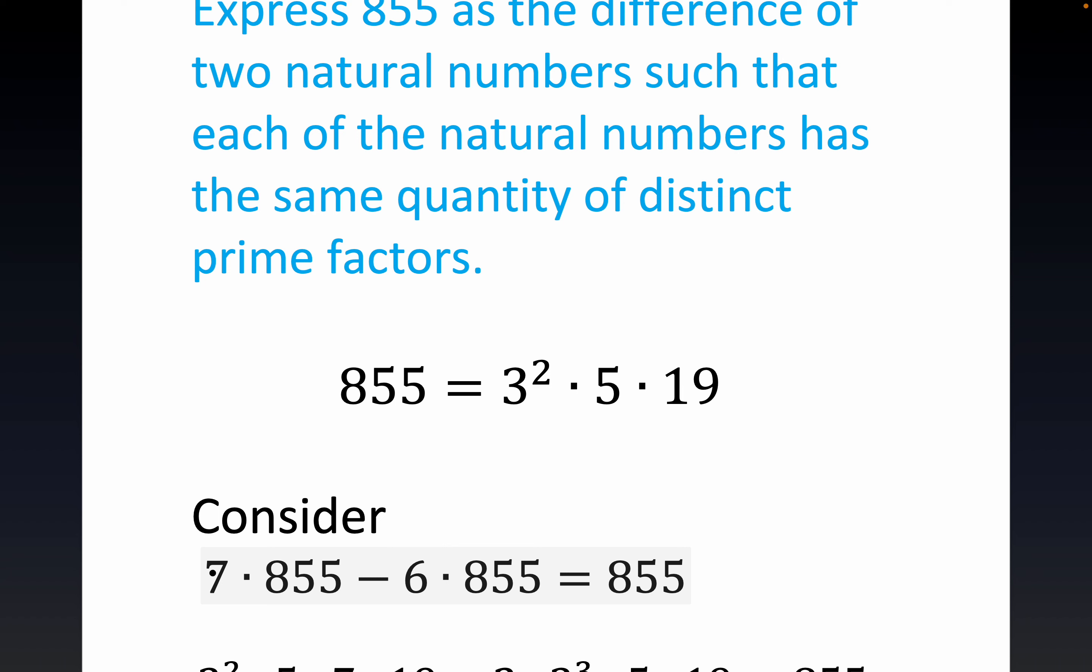You pick the smallest prime factor, which is 7, that's not in this prime factorization. So 7 is the smallest odd prime factor that's not in the prime factorization of the number we're interested in. We subtract 1, so 7 times something minus 6 times something is the something. But watch what happens here.